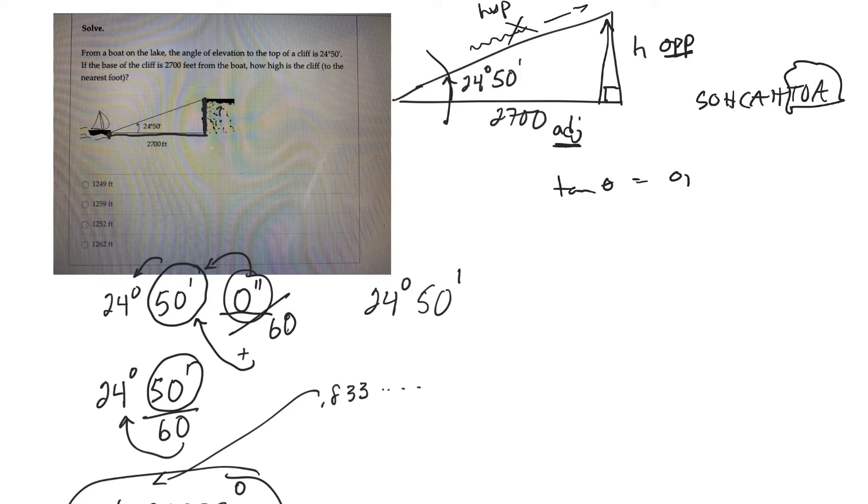So tan of an angle, opposite over adjacent. So the tan of 24.83333 degrees is equal to the opposite side, which I don't know, over the adjacent side, which is 2700. And then solve from there. Okay, hopefully that helps you out.